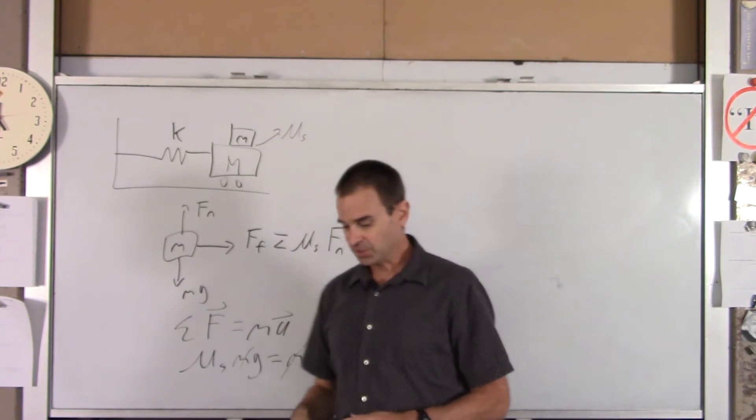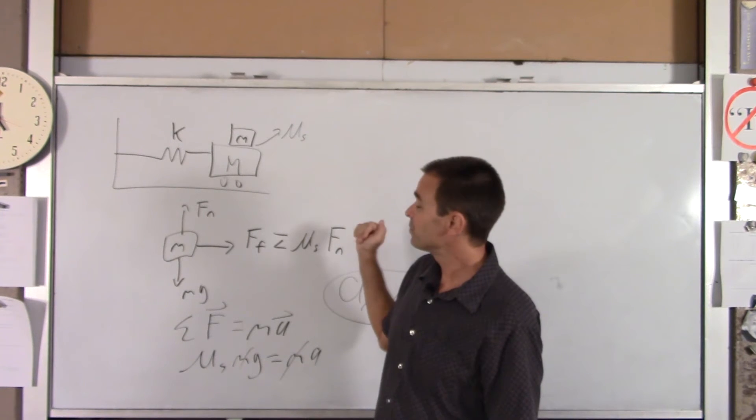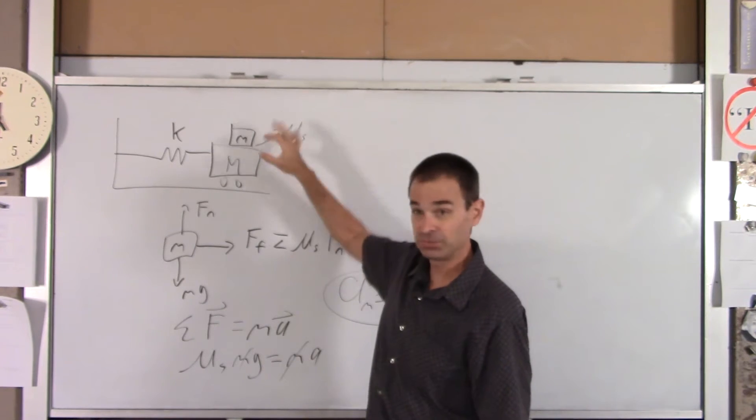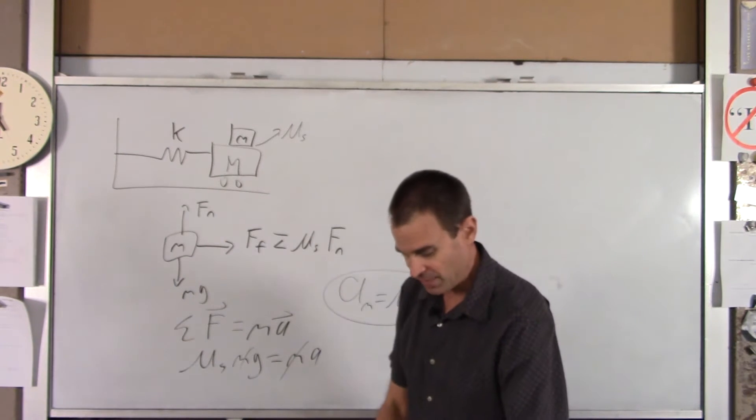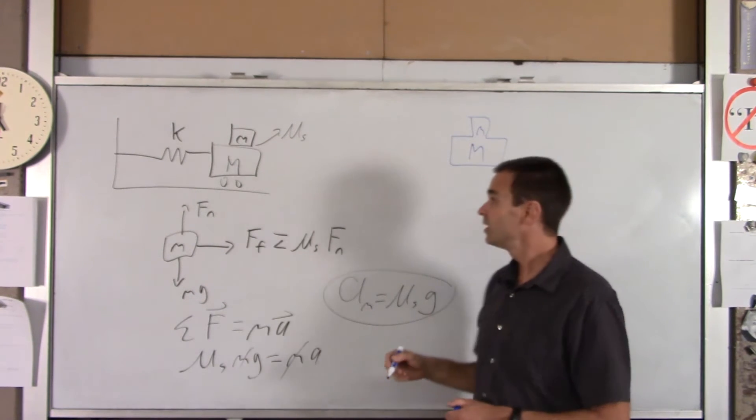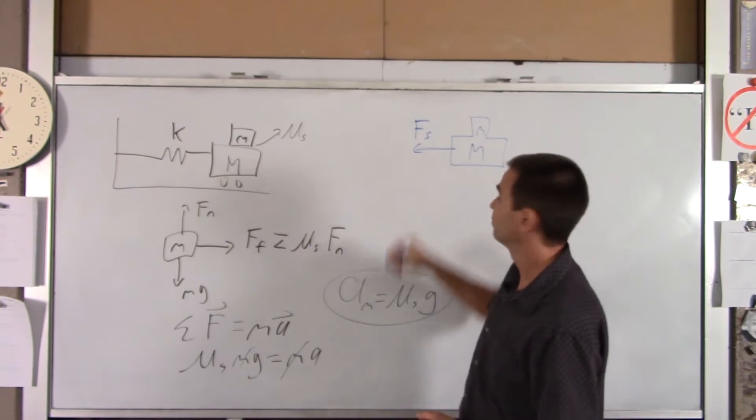Now, to find the biggest amplitude this motion can have, I am going to now look at the two-block system together. I'm going to draw that as one FBD. So, in that case, we have little m plus big M. The only force acting on these guys is the spring force.